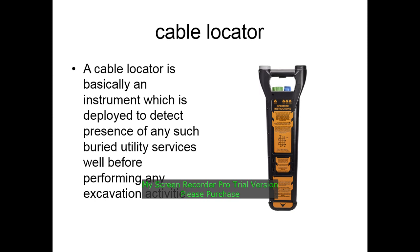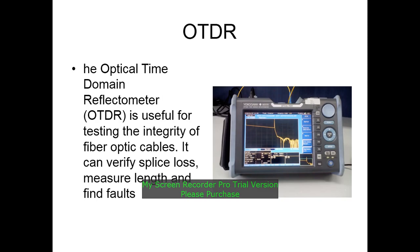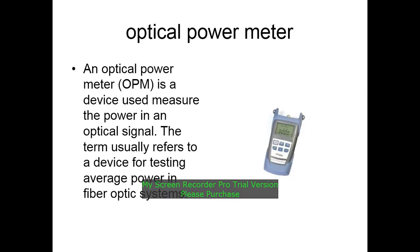Cable joints are used to connect low, medium, and high voltage cables. The joints provide electrical insulation as well as mechanical protection and strength. An OTDR, or Optical Time Domain Reflectometer, is used for testing the integrity of fiber optic cables. It can verify splice loss, measure length, and find faults.